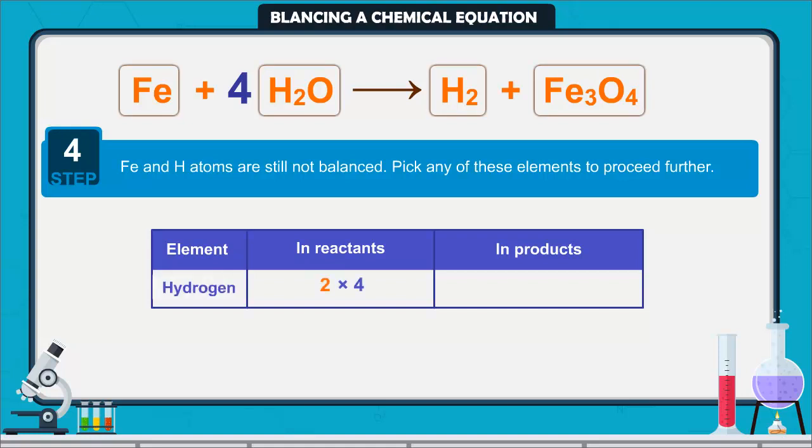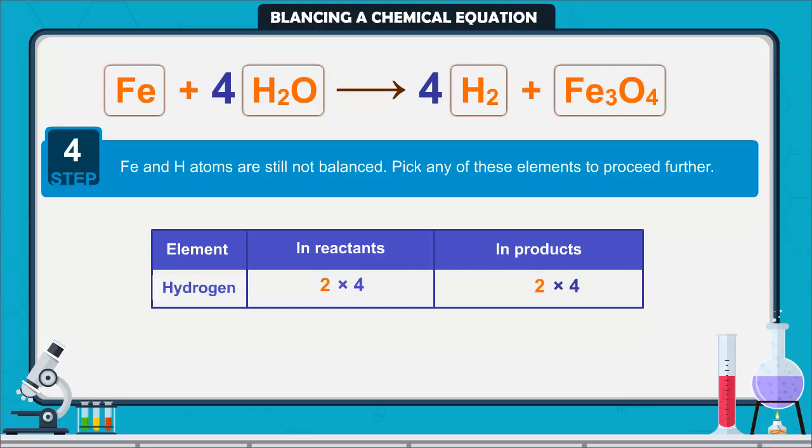4 into 2 means 8. So there are eight atoms of hydrogen on left hand side. Now how many hydrogen atoms on right hand side? Yes, there are only two atoms. To equalize the number of hydrogen atoms we will put coefficient 4 at H2.